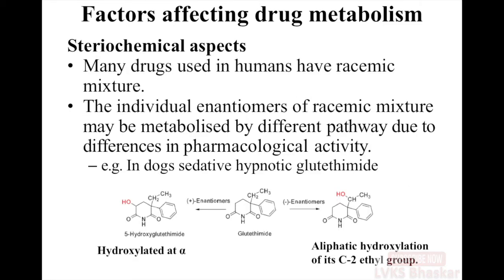Another important aspect is stereochemical differences. Many drugs used in humans are racemic mixtures, meaning they have positive and negative enantiomers. The individual enantiomers may be metabolized by different pathways due to differences in pharmacological activity. In dogs, the sedative-hypnotic glutethimide is hydroxylated at the alpha position in the positive enantiomer, while aliphatic hydroxylation occurs at the C2 ethyl group in the negative enantiomer. With this, I conclude my presentation. Thank you very much.